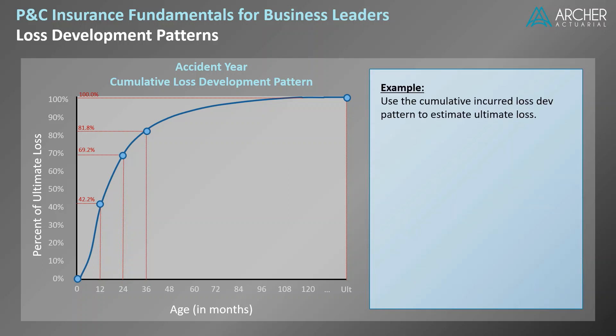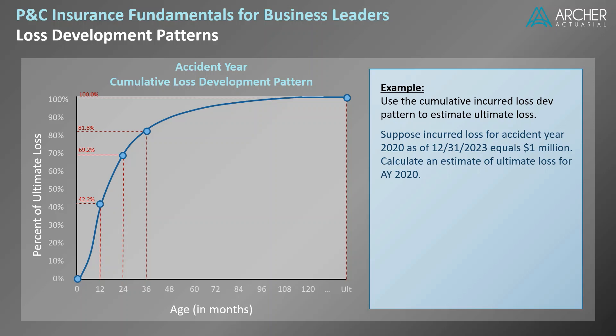In this example, we're going to use our cumulative incurred loss development pattern illustrated on the left-hand side of the screen to provide an estimate of ultimate loss. Suppose incurred loss for accident year 2020 as of 12-31-2023 equals $1 million. Calculate an estimate of ultimate loss for accident year 2020. The first thing we want to consider is whether the development pattern in our example is relevant to the losses we're trying to estimate. For the sake of simplicity, we're going to assume that it is — but that's always a question you want to ask yourself. You don't want to apply any development pattern to just any problem; there has to be a correspondence.